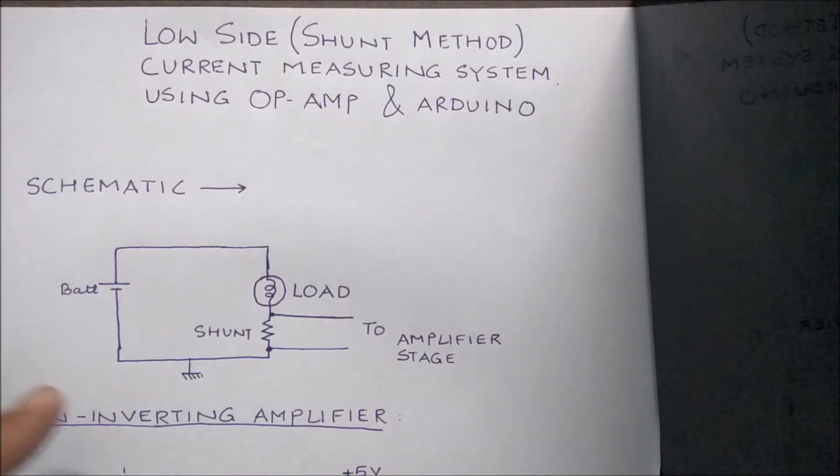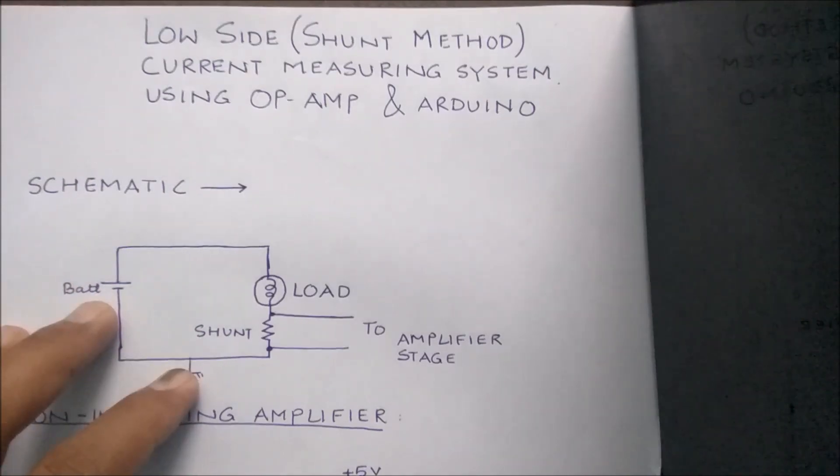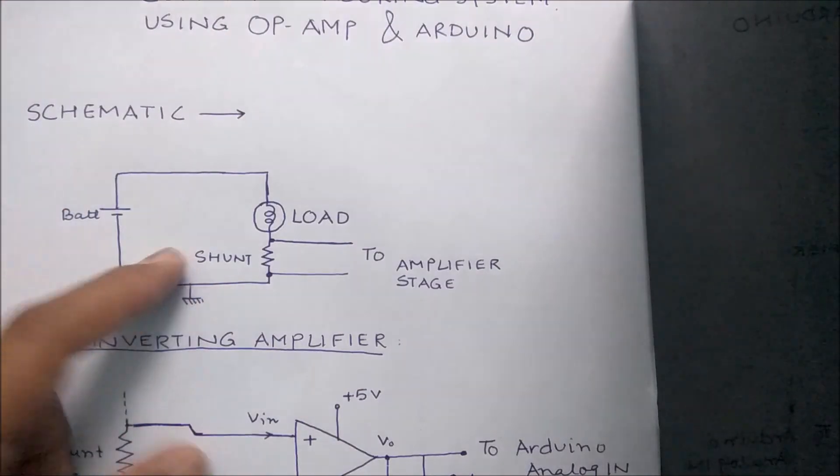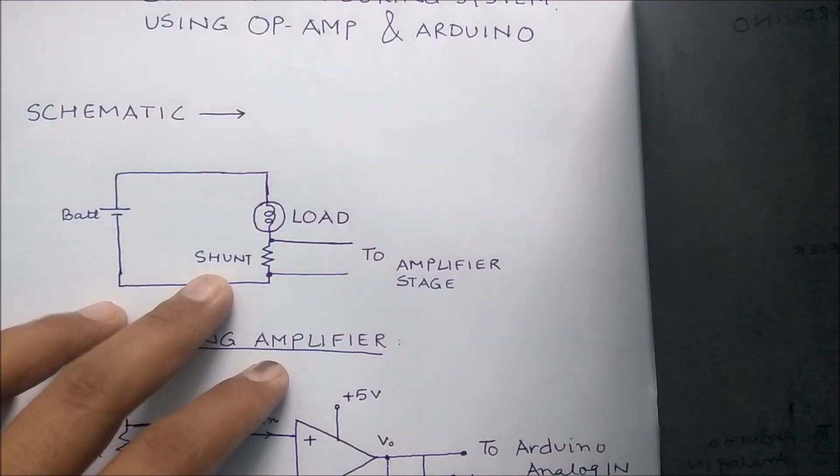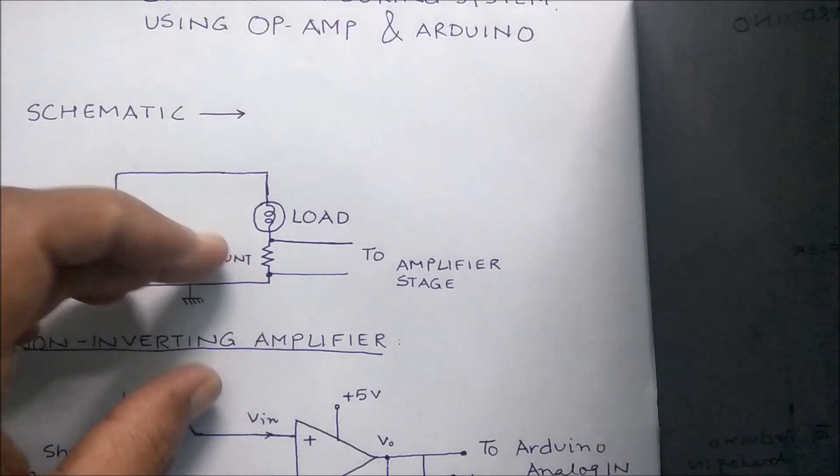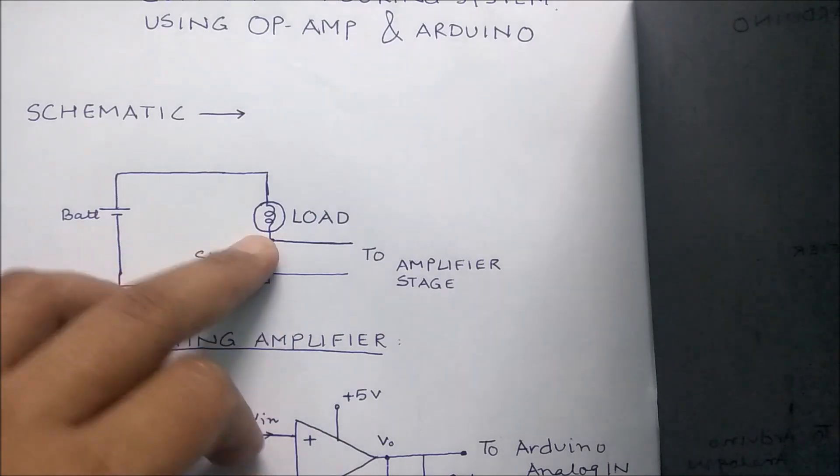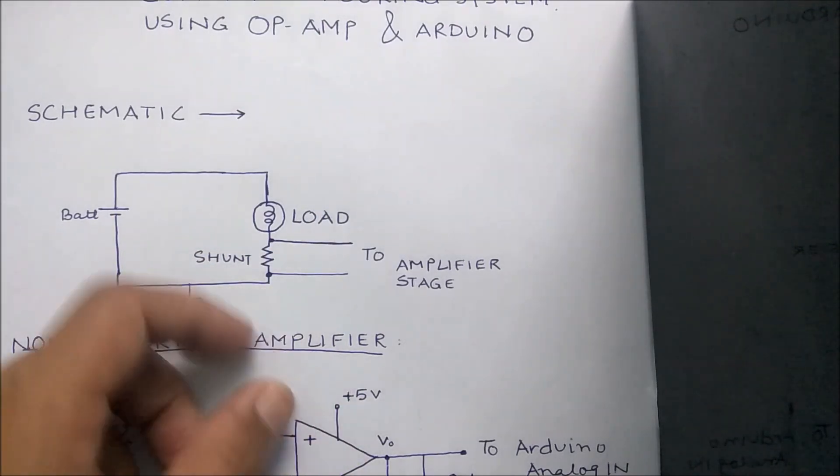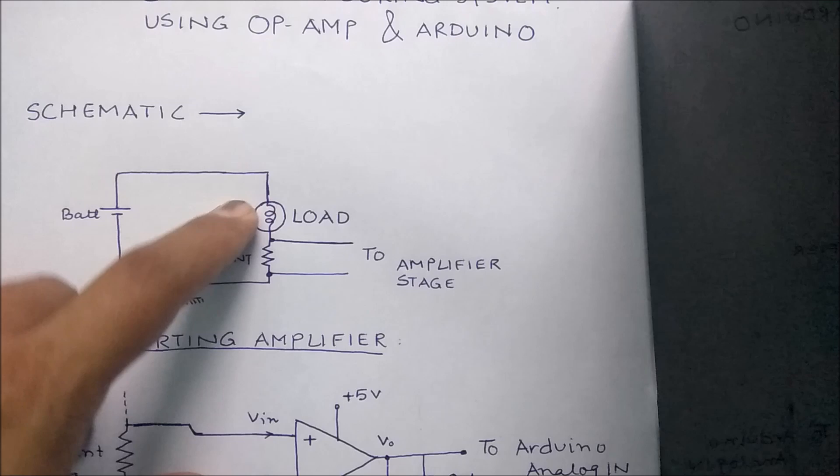Before we make the project, here's some theory on how to make the current sensor work. Typically we use a shunt, and the main concept behind using the shunt is to create a small amount of voltage drop which can further be amplified and measured by Arduino.